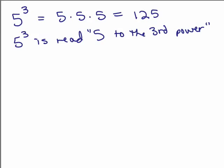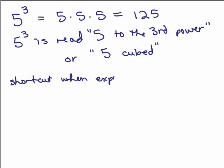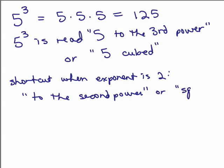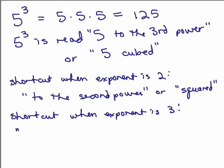Power is another word for exponent. Or it so happens anytime it's a 3, a shortcut, instead of saying to the third power you could say 5 cubed. So shortcut when the exponent is 2, instead of saying to the second power, you can say squared. And the shortcut when the exponent is 3, you can either say to the third power or you could just say the word cubed.